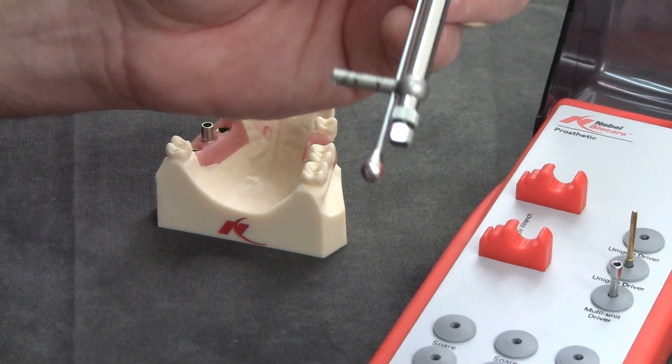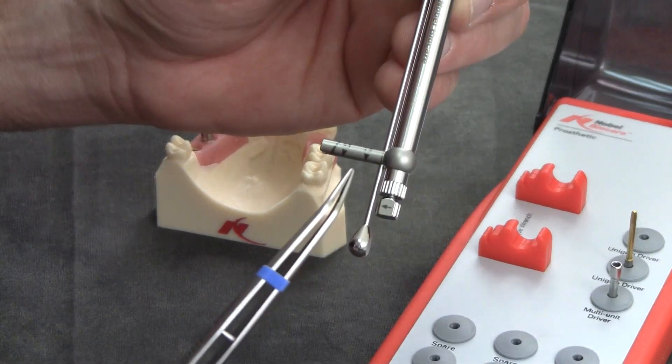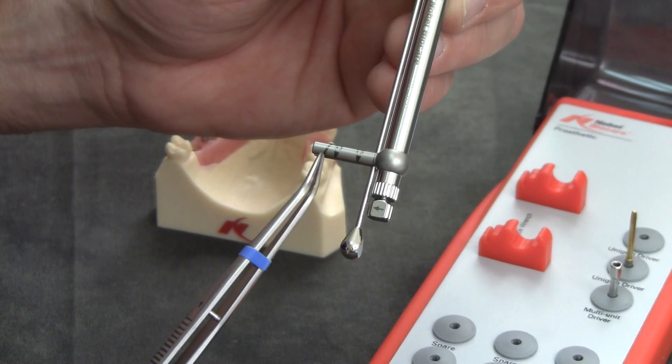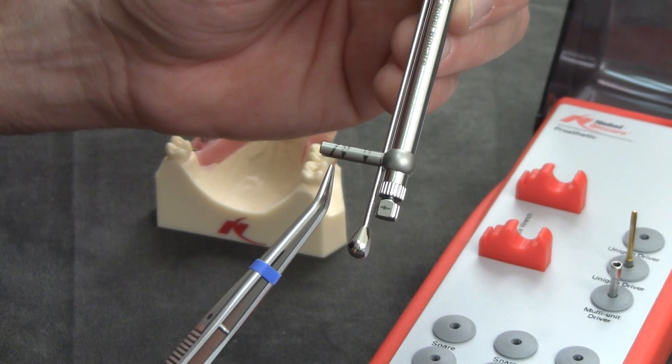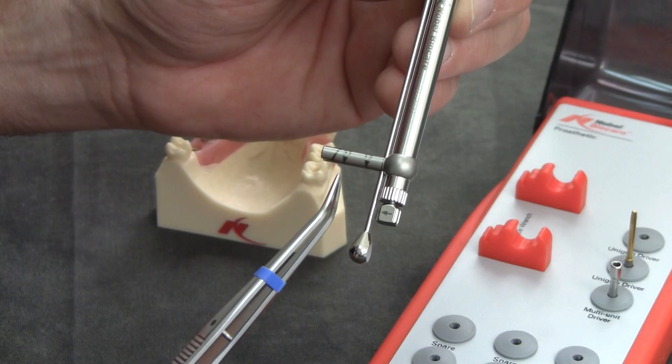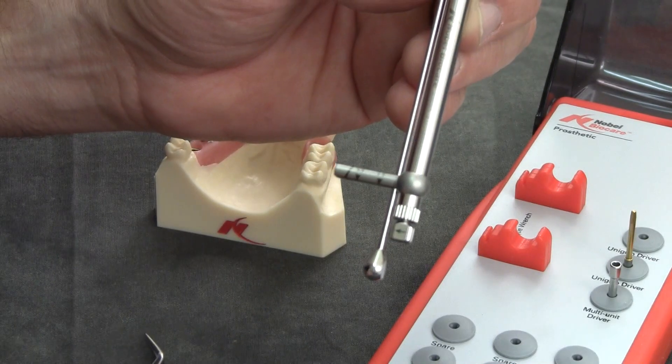Now we're ready to torque. You can also see here that it's clearly marked at 15 and 35 newton centimeters of torque. Please refer to your prosthetic manuals for the proper torque level for each screw.